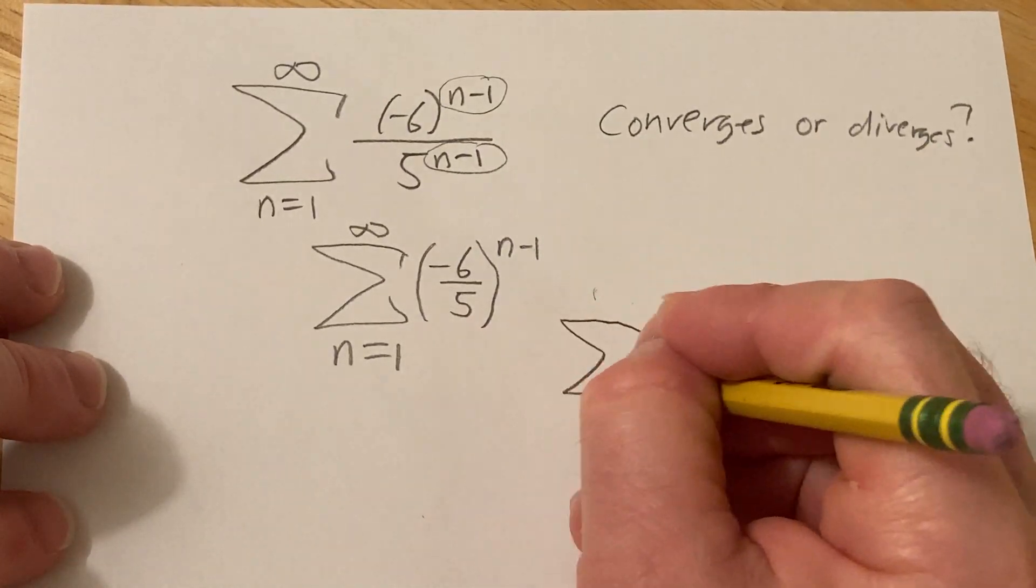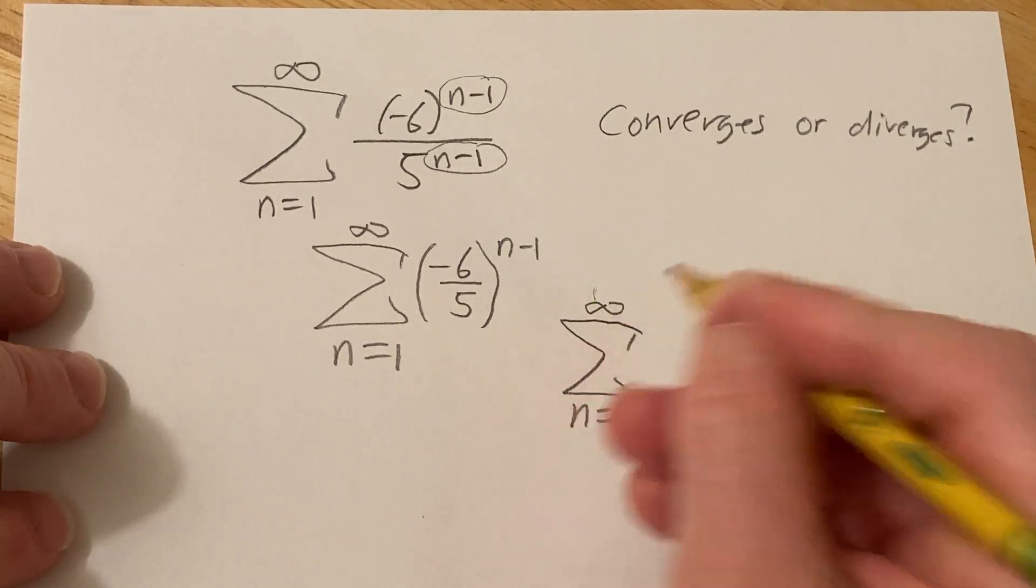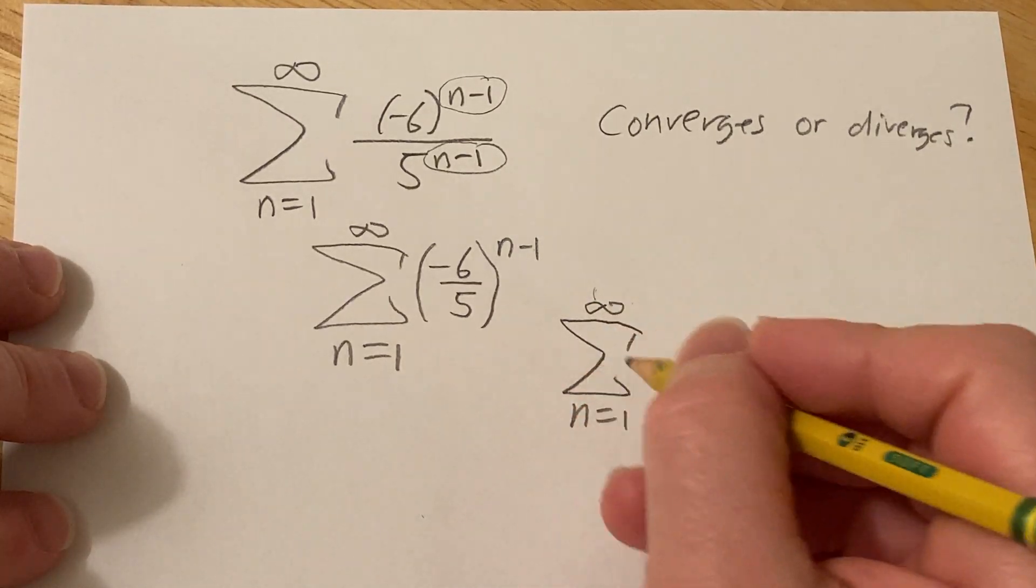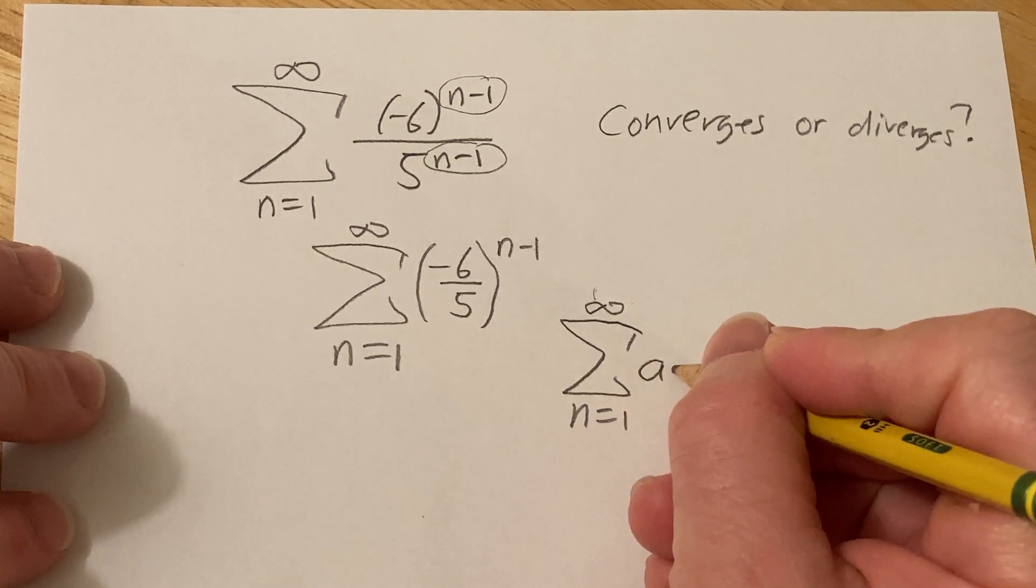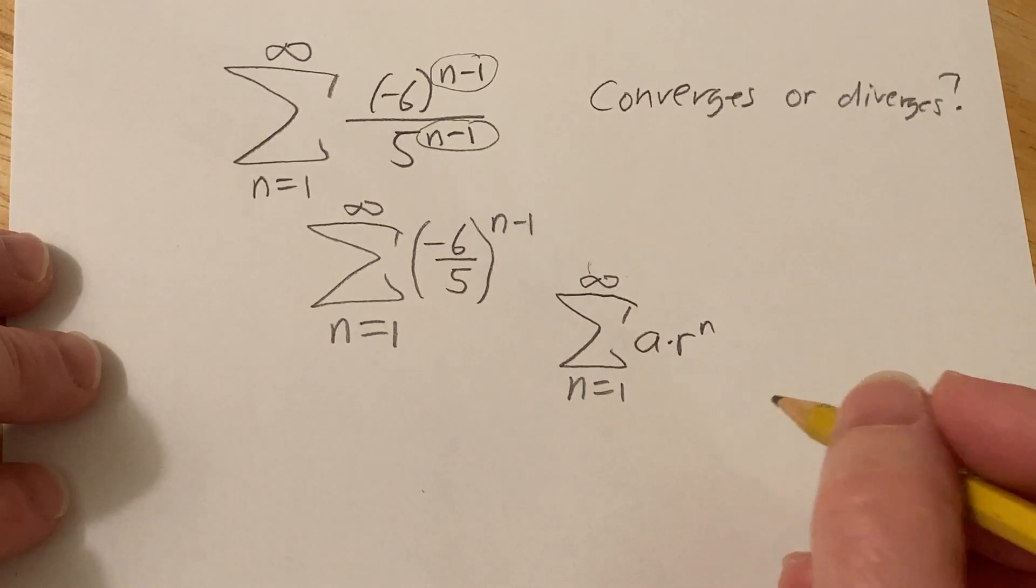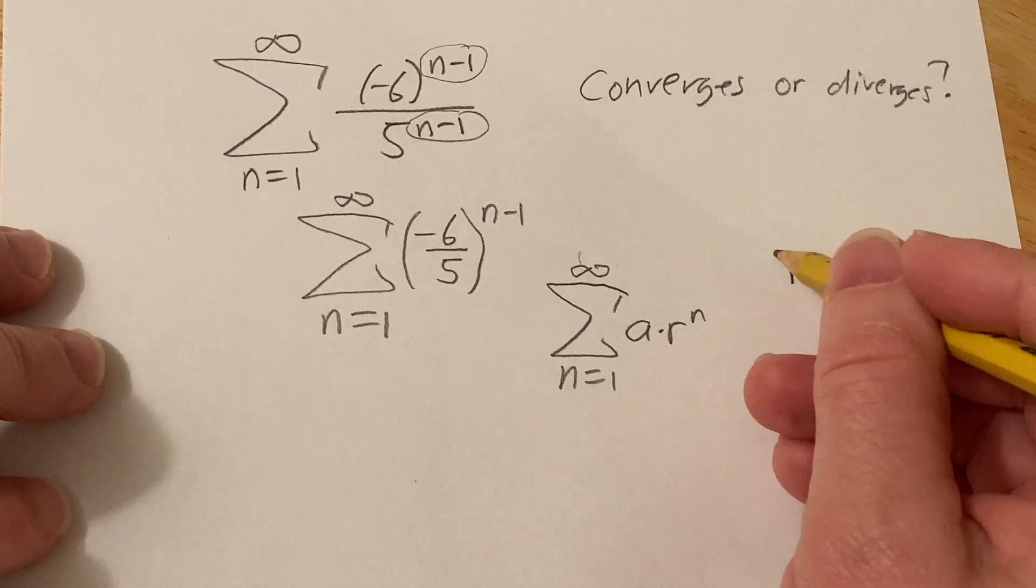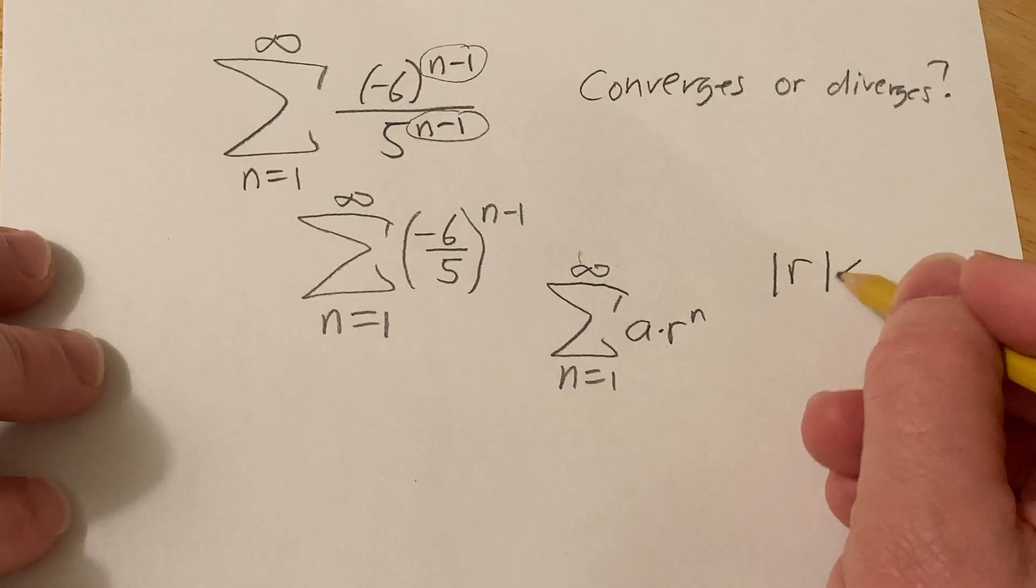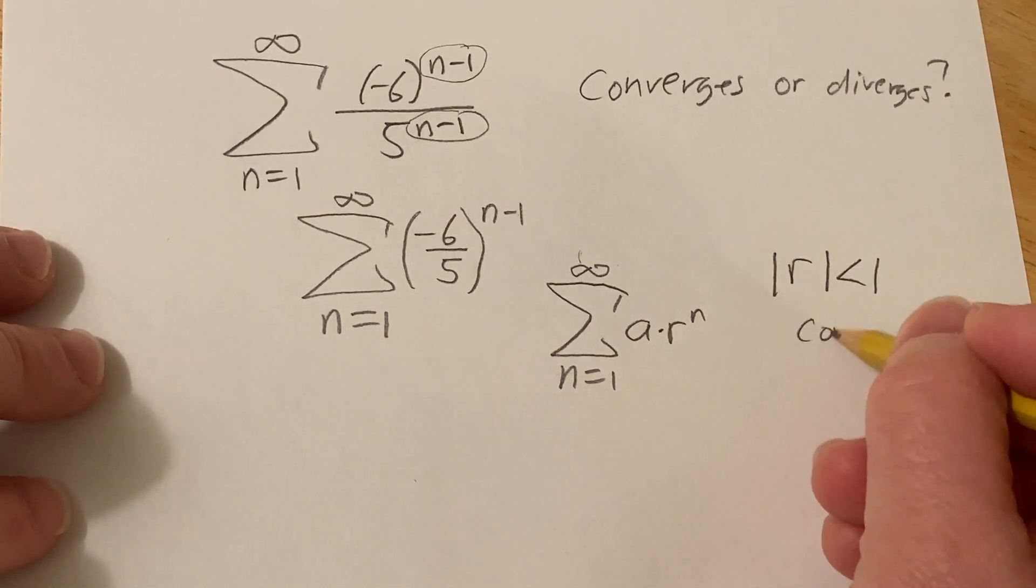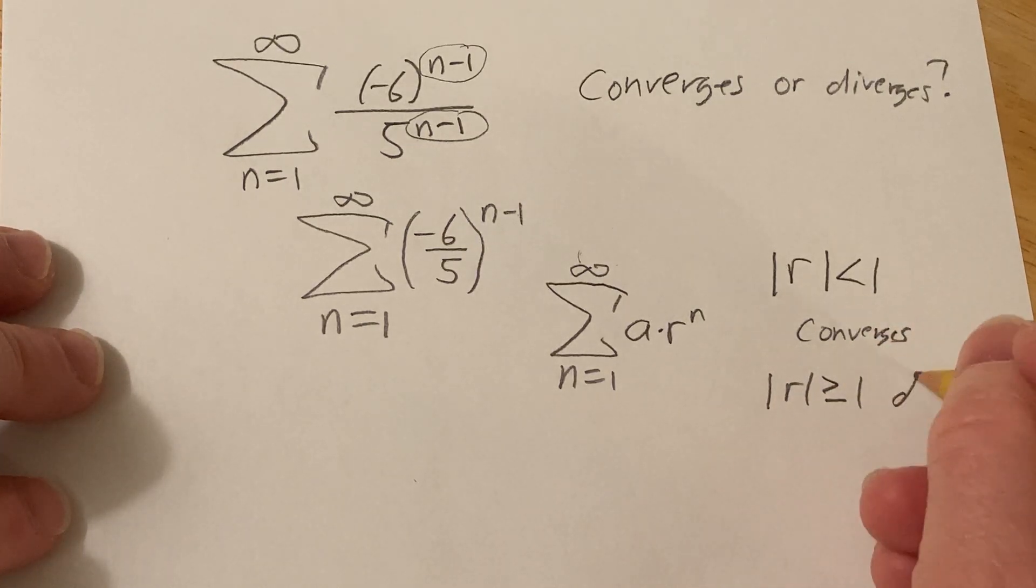Geometric is basically when you have a series that looks like this. Say we start at 1, you can start at any number, and you have a times r to the n. If it has this form, it's called an infinite geometric series. And there's a theorem that says that if r is less than 1 in absolute value, then it converges. And if r is greater than or equal to 1, then it diverges.